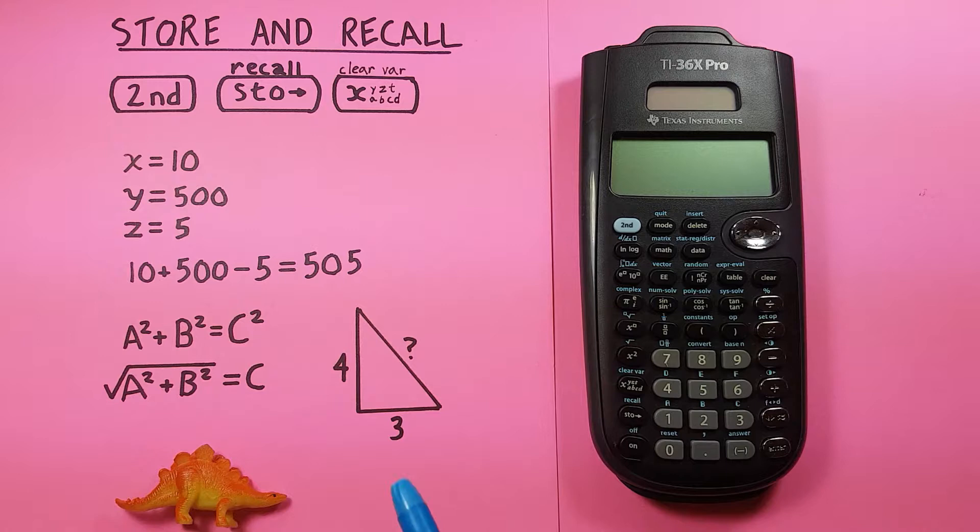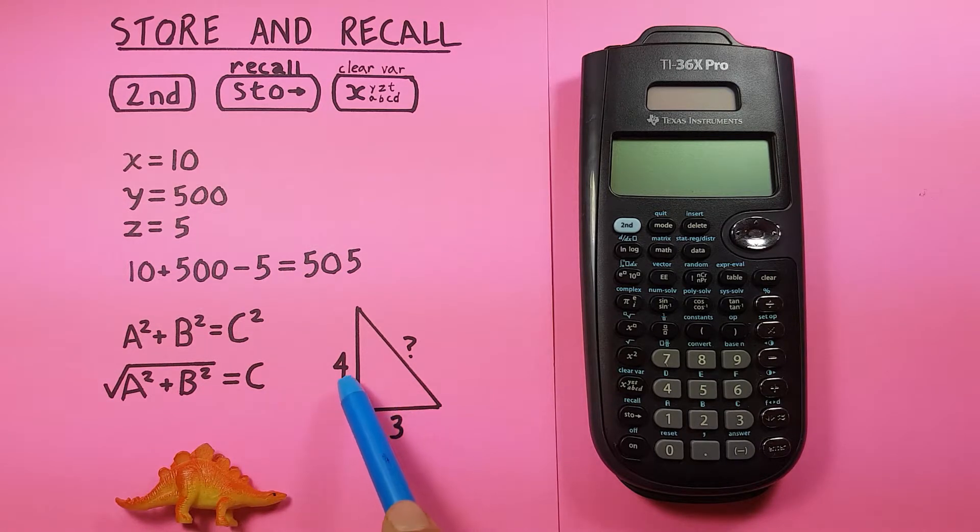So, if we already have a and b, we'll say this side is a, 4 is a, and this side is b.